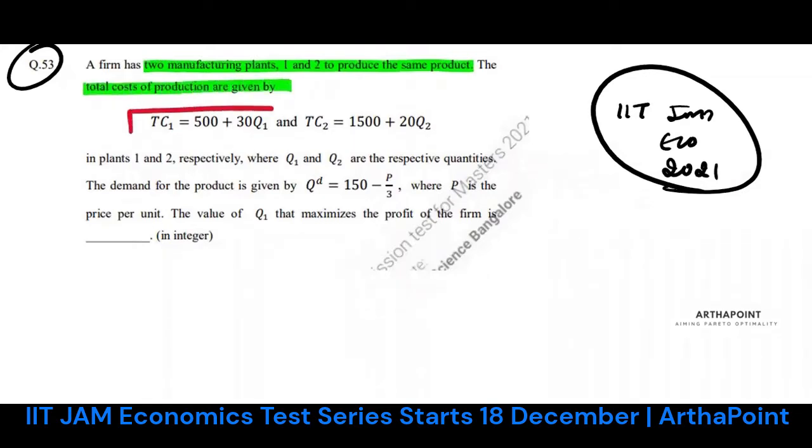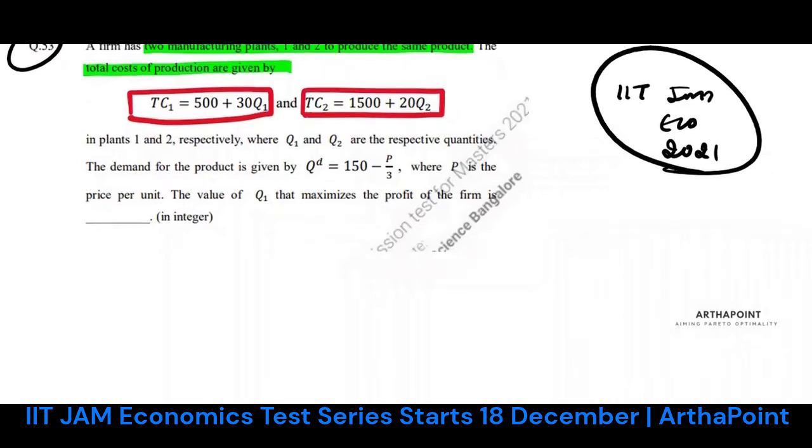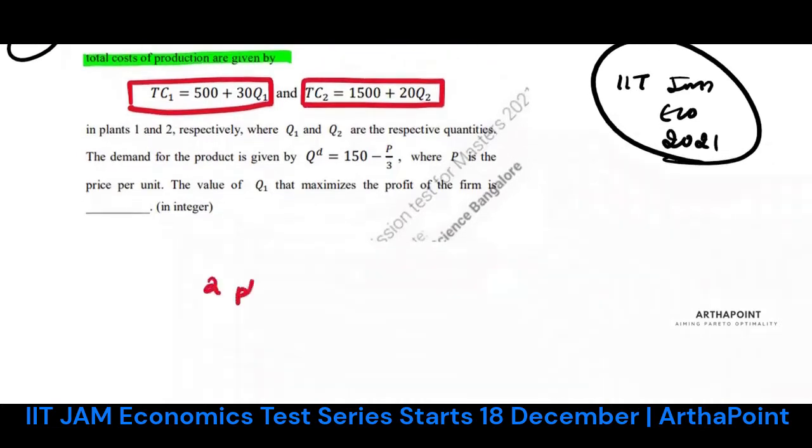The total cost of production is given. This is cost from plant 1, cost from plant 2. As a basic rule, whenever a firm has two plants, it would be using both plants for the purpose of manufacturing.